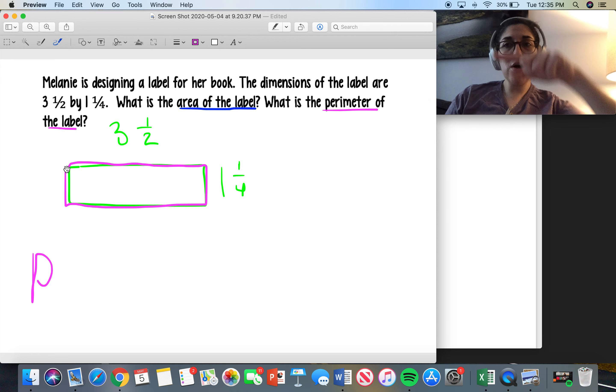Now if you remember what we said earlier, we talked about this on Monday, but whatever this side is because it's a rectangle, this will also be the same. So this will be three and a half. And whatever this side is because it's a rectangle, this will also be the same. So it's going to be one and one-fourth.